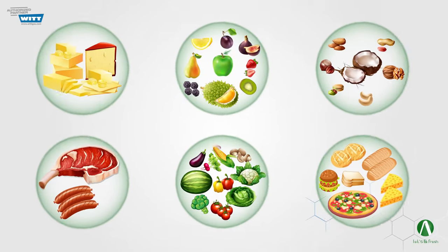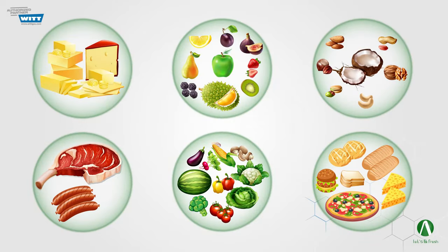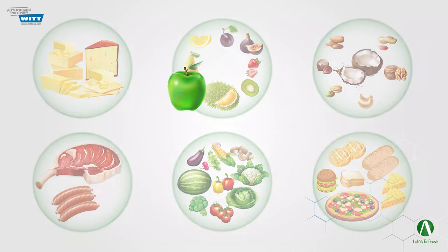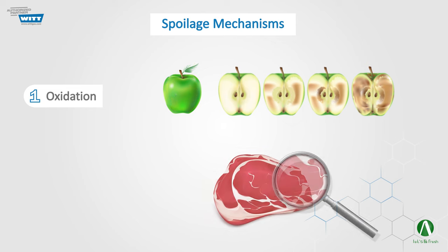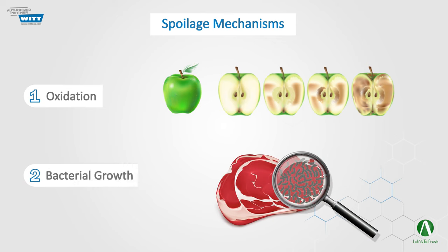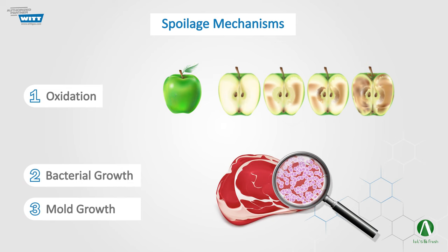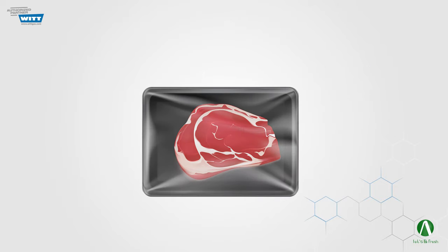When packed in air, food is susceptible to three main spoilage mechanisms: simple oxidation, bacterial growth, and mold growth. However, all of these can be suppressed or reduced by packaging the food in the appropriate modified atmosphere.